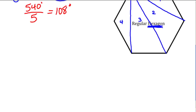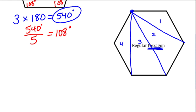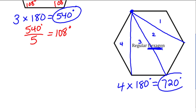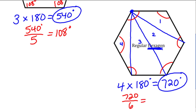With six sides and four triangles, I want to know what all those angles add up to. Four triangles times 180 degrees is 720 degrees, so all interior angles of a hexagon add up to 720 degrees. To find the measurement of each angle, I divide by six because a hexagon has six sides and six angles. Each angle is 120 degrees.